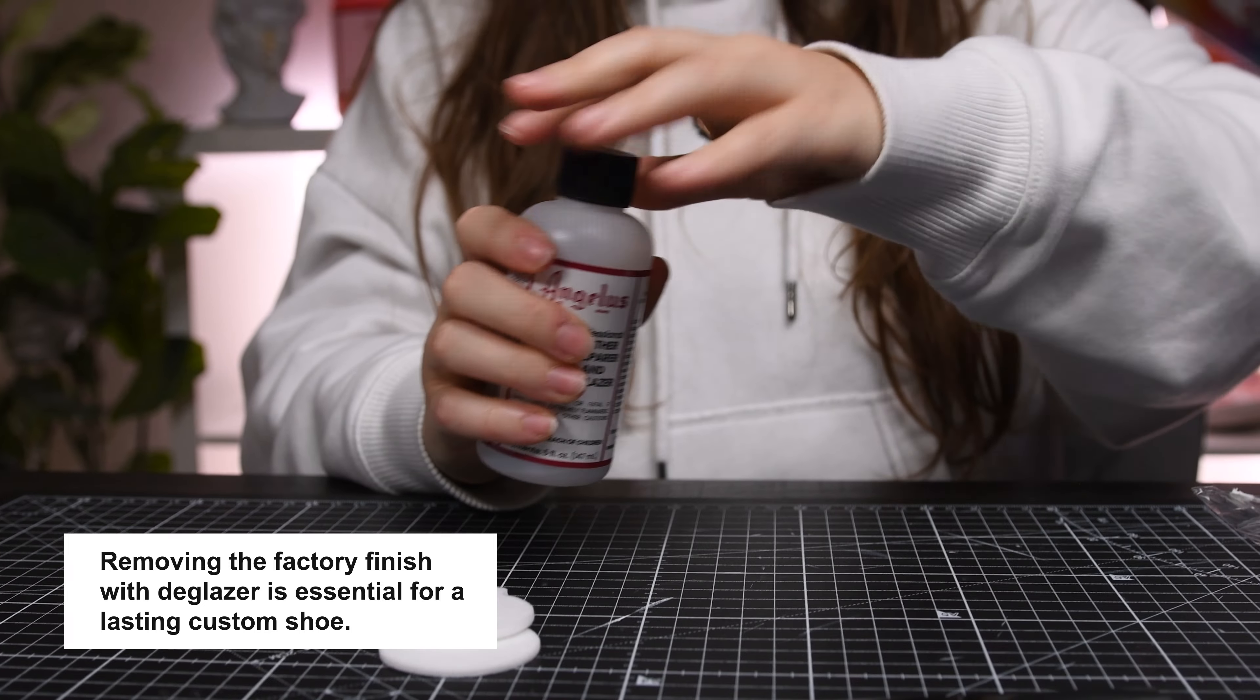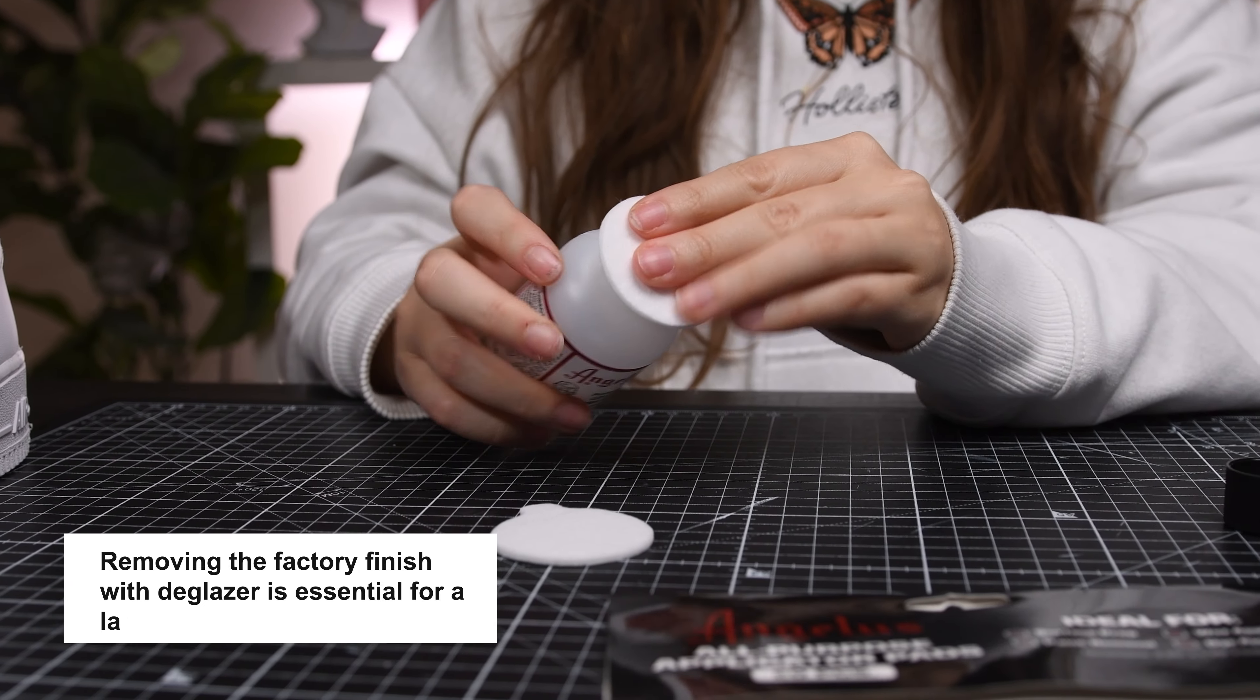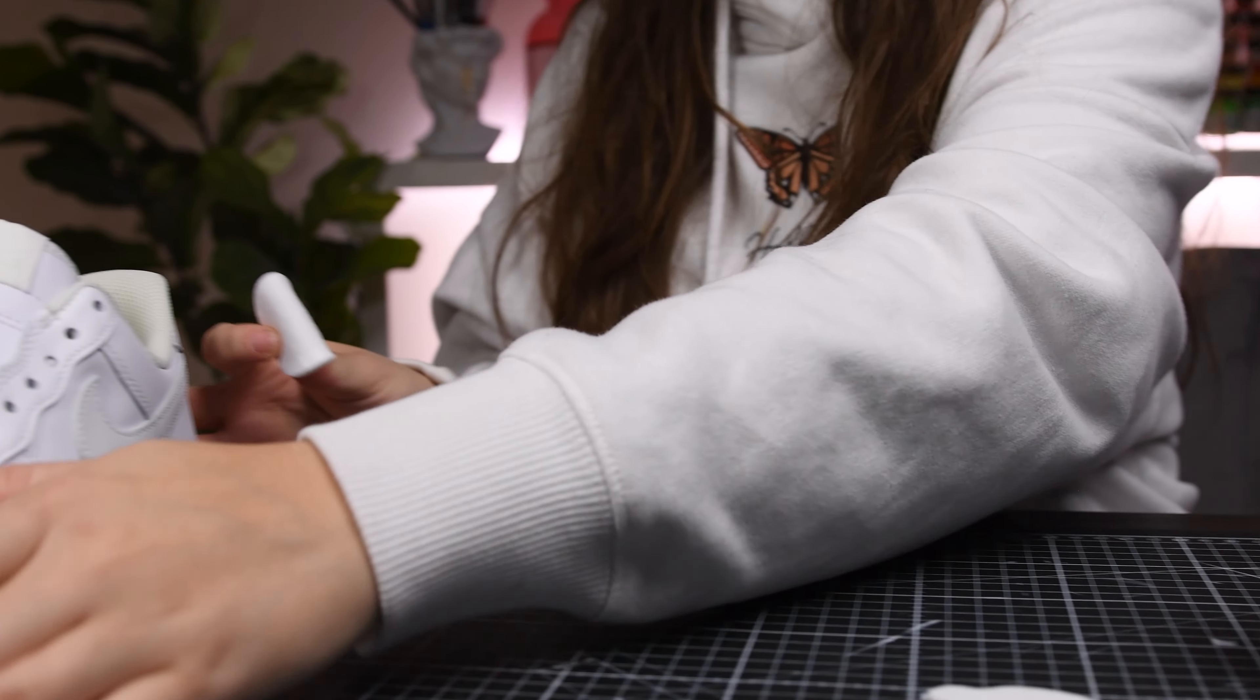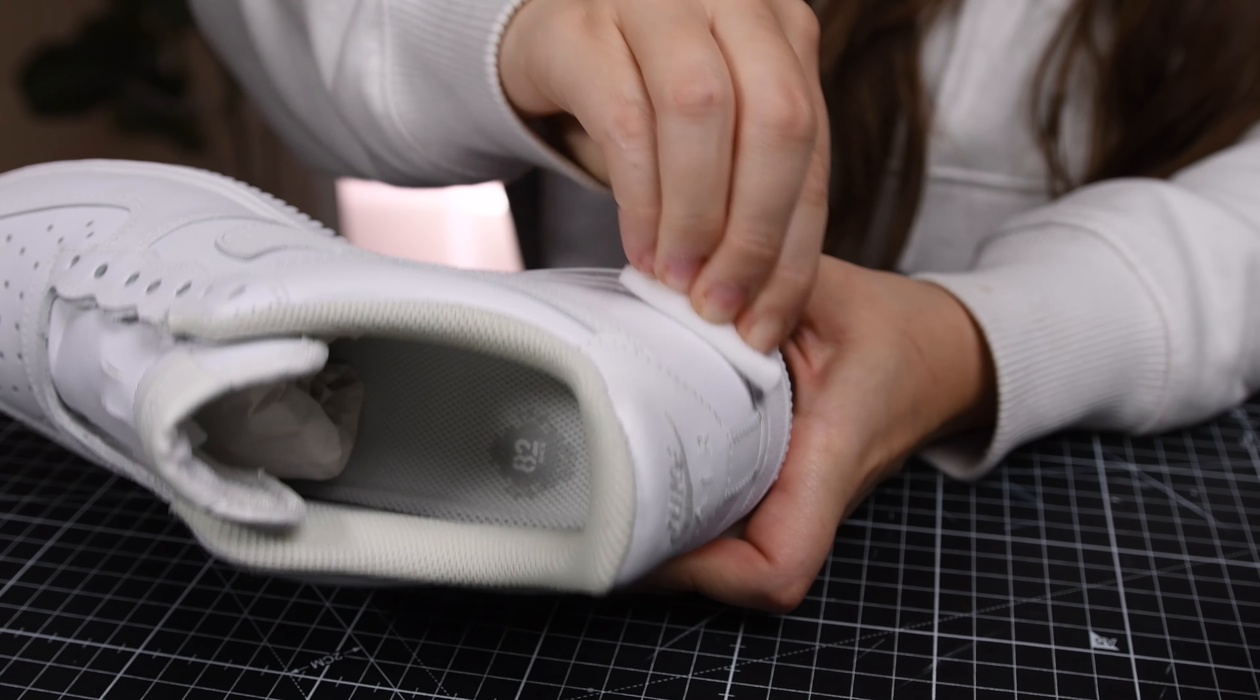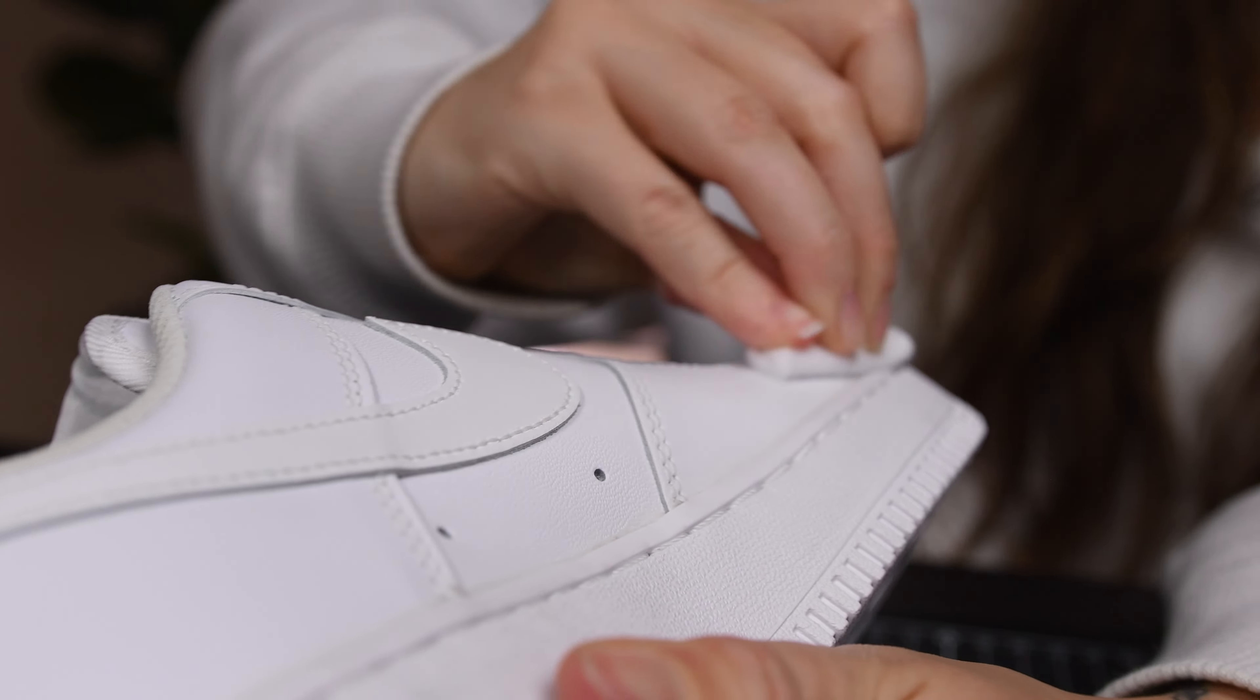Now let's take everything we've learned and apply it to create a custom shoe with this new glow-in-the-dark paint. As always, I prep my leather shoes by removing the factory finish with Angelus de Glazer so the paint adheres fully to the material. Be sure to take your time with this step as it's really important for a long-lasting custom shoe.